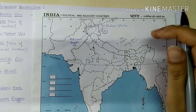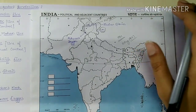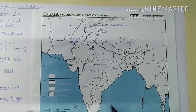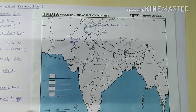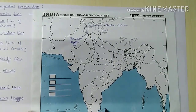The Palk Strait is between India and Sri Lanka. It is a narrow gap or bridge between the two countries and is known as the Palk Strait.